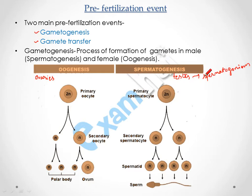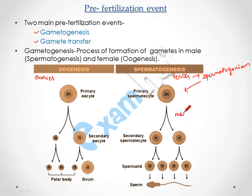The spermatogonium divides mitotically and produces primary spermatocytes. The primary spermatocyte replicates its DNA, after which meiosis I takes place. After meiosis I, secondary spermatocytes are formed, each containing half the number of chromosomes.